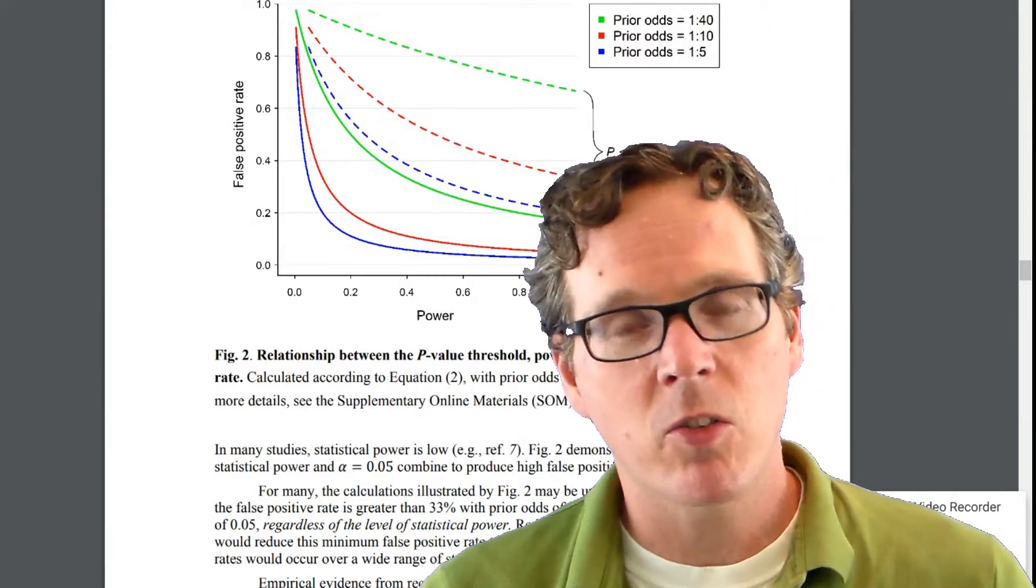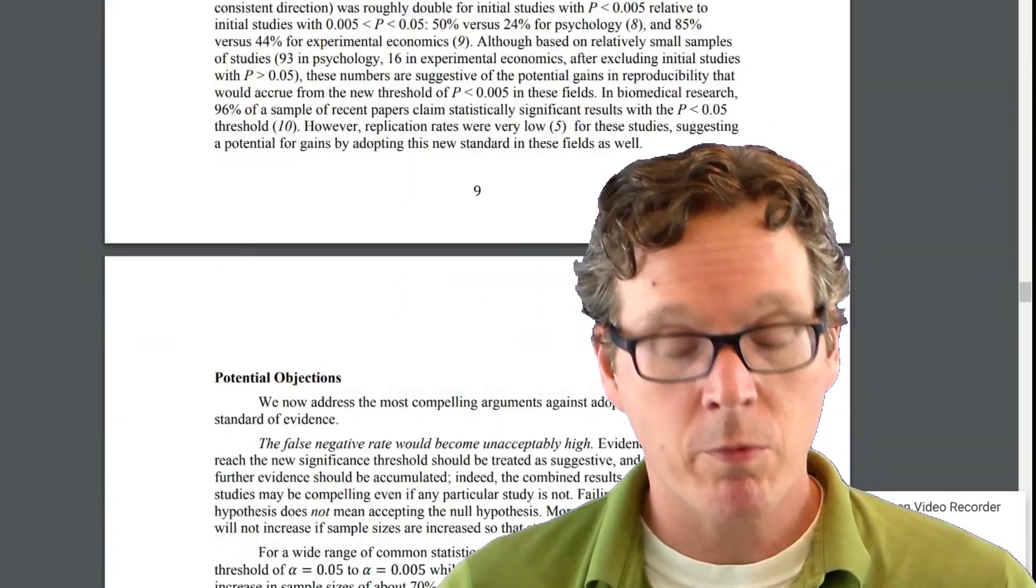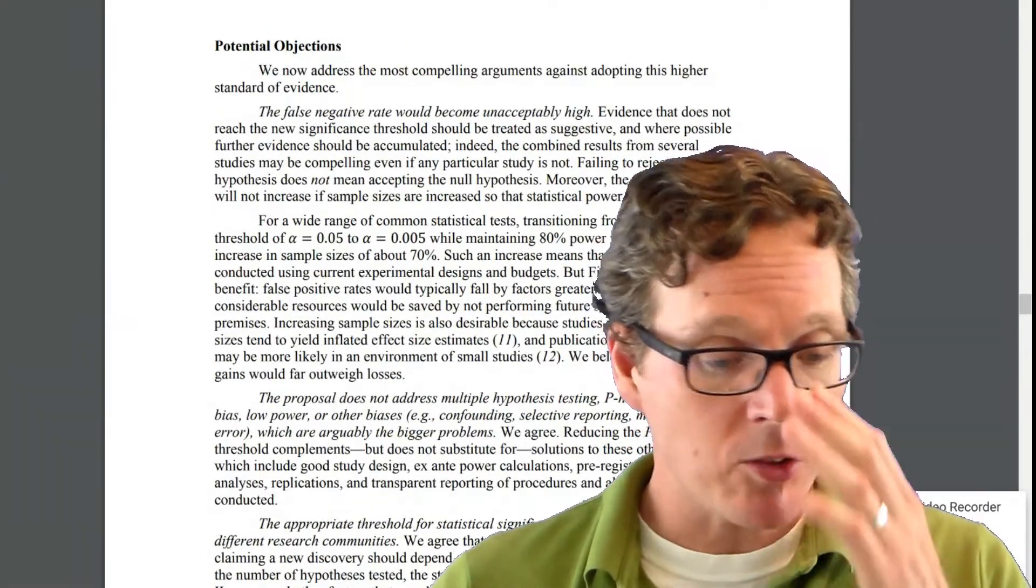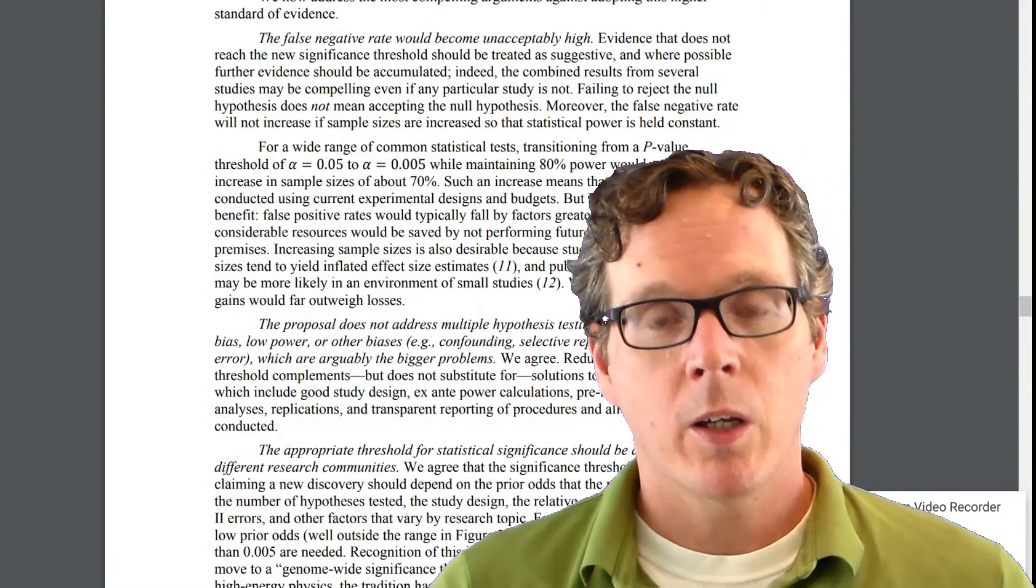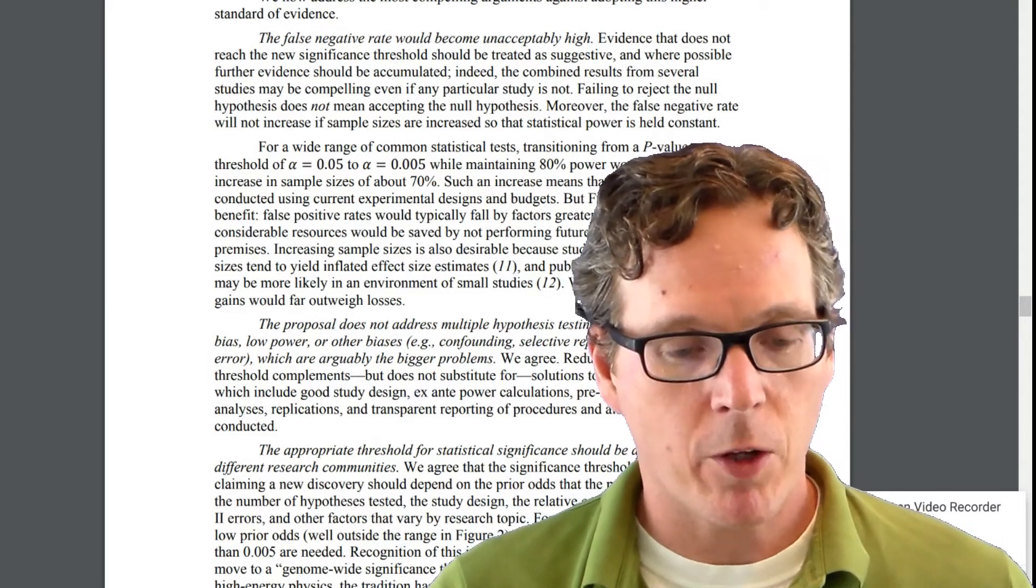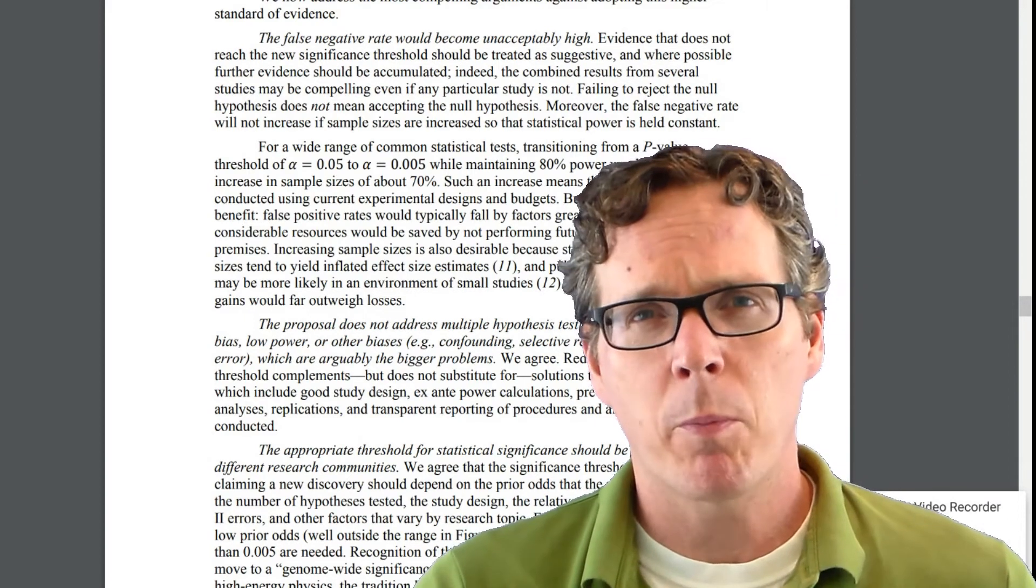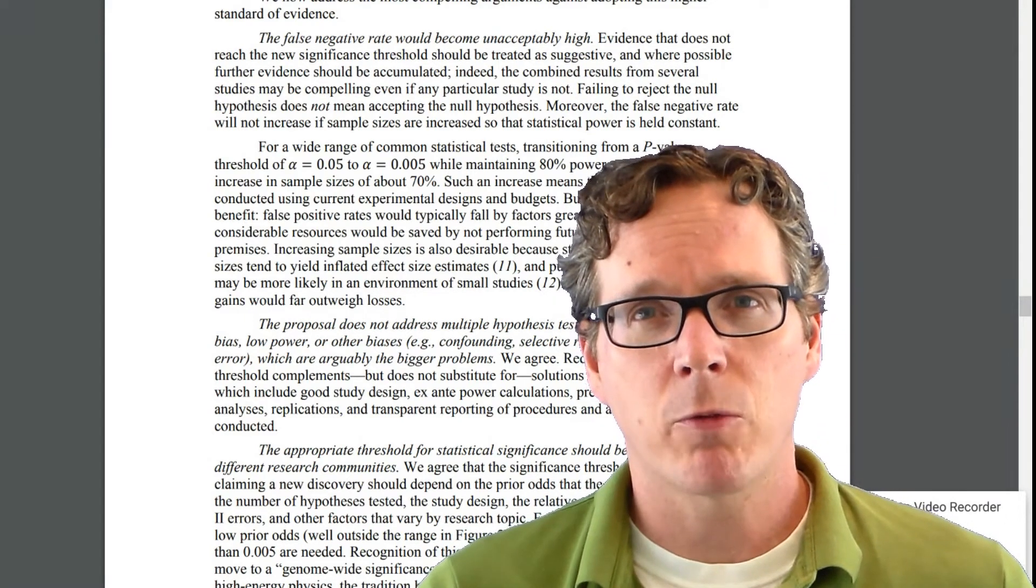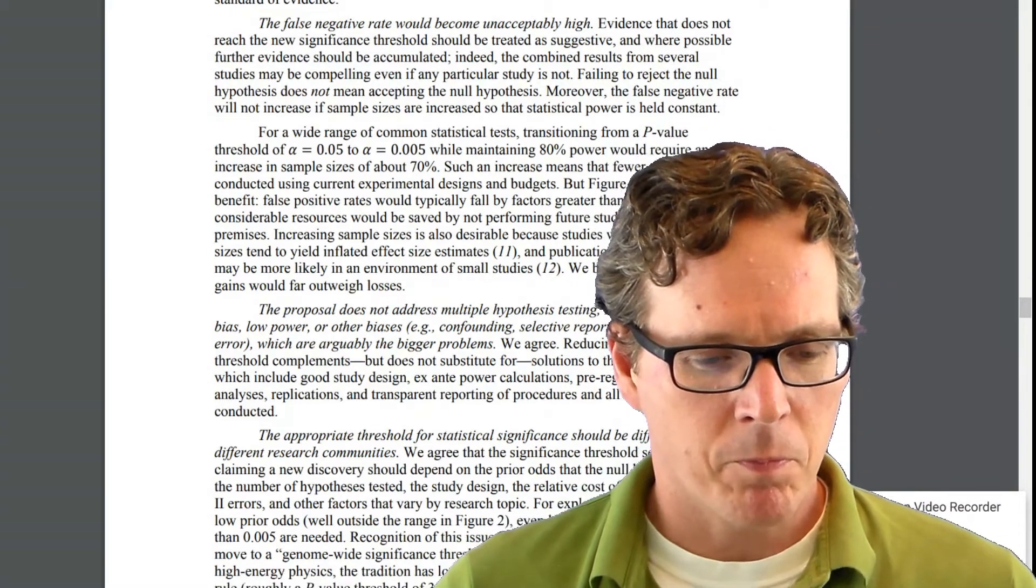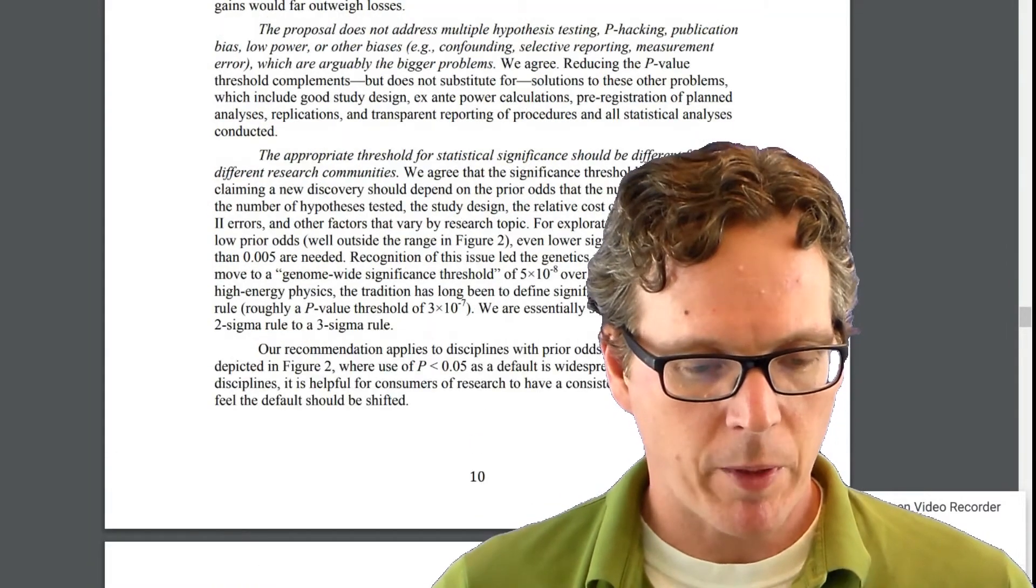So that's the gist of the arguments. And it's pretty well argued. I think it's a very accessible paper. I would suggest you read it. And many of the common objections, they very much so dealt with, the first being of course, potentially that the false negative rate would be too high if we control the false positive rate much higher. But I think that's their fundamental point is that we think the false positive rate is too high. So we're willing to make that trade-off that that's the starting point.